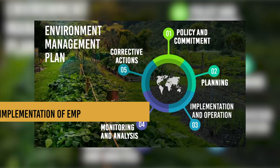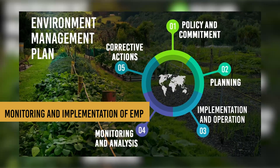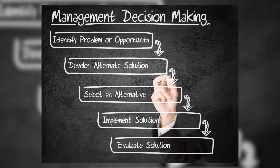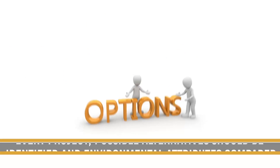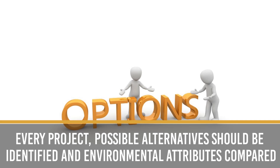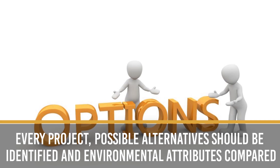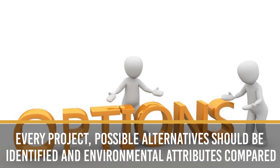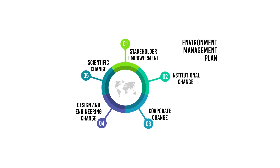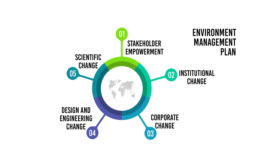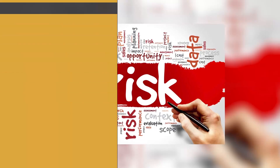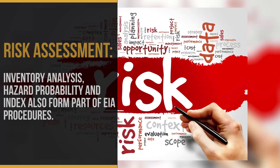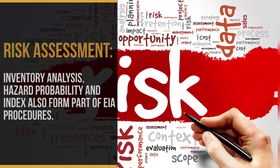Monitoring the implementation of the environmental management plan means that the various phases of implementation of the project are always monitored. Assessment of alternatives, delineation of mitigation measures, and the environmental impact assessment report: for every project, possible alternatives should be identified and environmental attributes compared. Alternatives should cover both project location and process technology. Once alternatives have been reviewed, a mitigation plan should be drawn up for the selected option, supplemented with the environmental management plan. Risk assessment, inventory analysis, and hazard probability and index also form part of the EIA procedures.